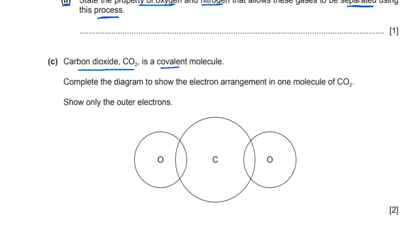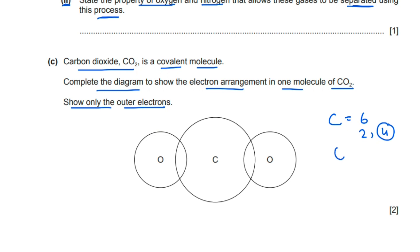Carbon dioxide is a covalent molecule. Complete the diagram to show the electron arrangement in one molecule of carbon dioxide, showing only the outer electrons. Carbon has a total of six electrons — two in the inner shell and four in the outer shell, so we draw four. Oxygen has a total of eight electrons — two and six — with six in the outer shell. Carbon is bonded with a double bond to oxygen on both sides.